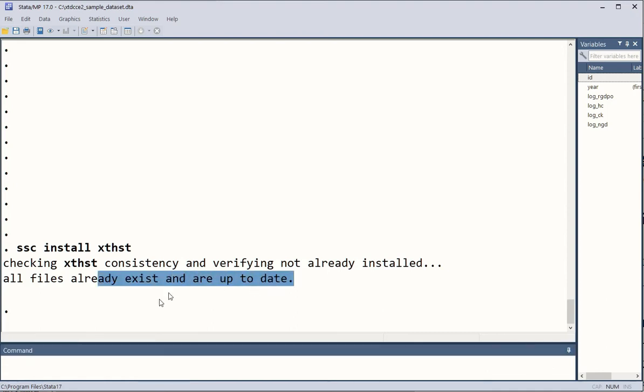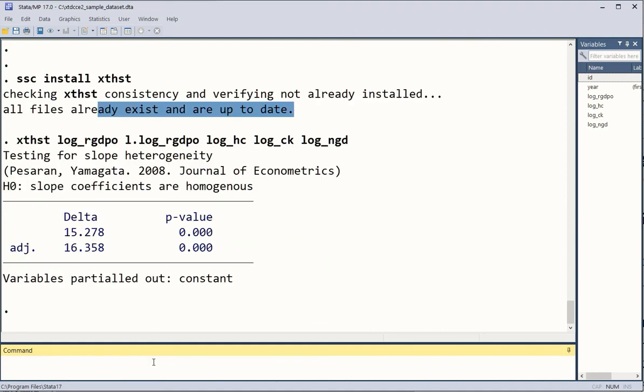Now we run the command with the given data that we have. This is the command, the keyword. Then we have the first variable, which is the dependent variable, and then its lag version because of the dynamic specification we are using. Then we have the first independent variable, the second independent variable and the third independent variable. We just need to click enter and we will get the results.